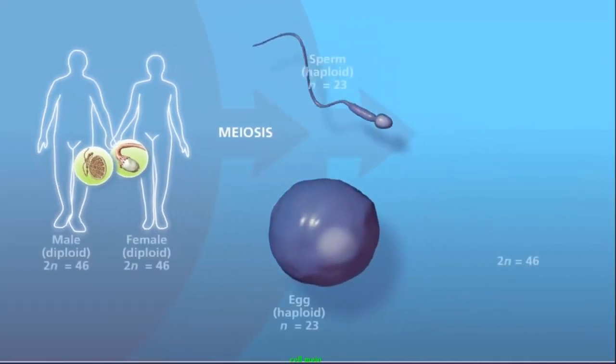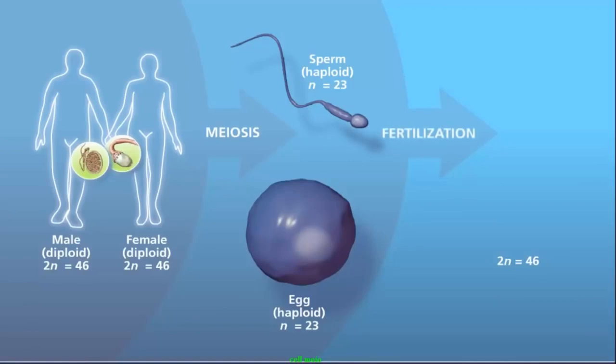These fuse in fertilization to form a zygote, which will grow into a child. The child receives half its chromosomes from its mother and half from its father. Because men and women produce millions of gametes and the selection of gametes in fertilization is random, this contributes to genetic diversity.